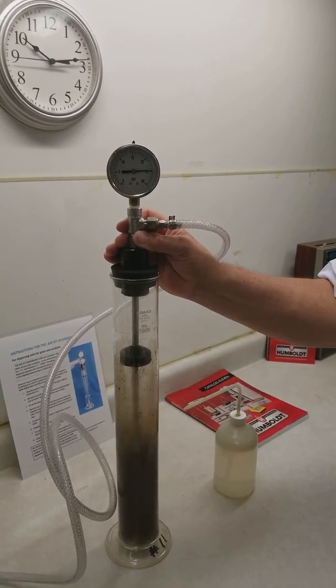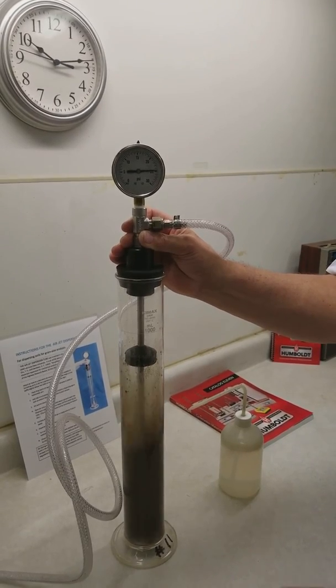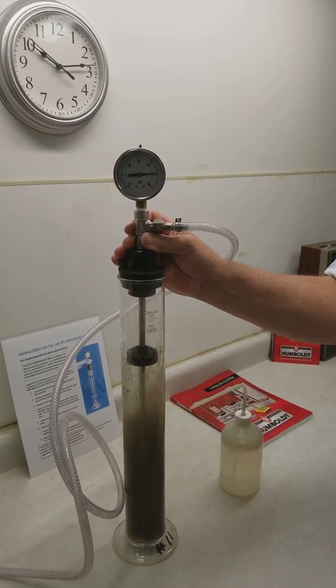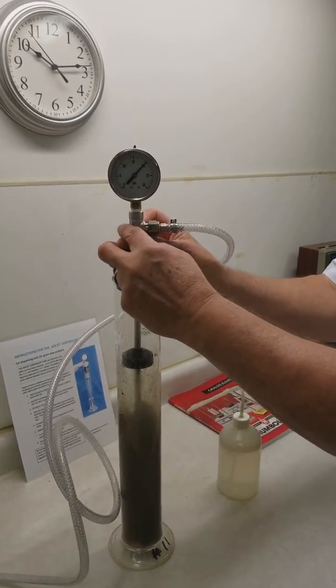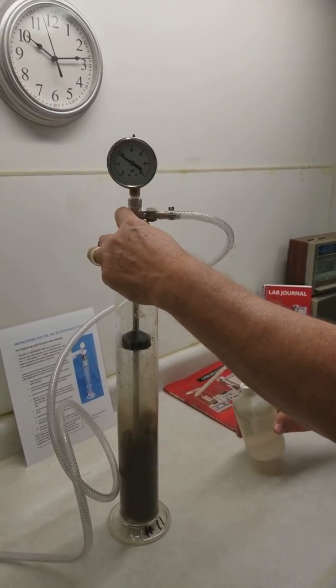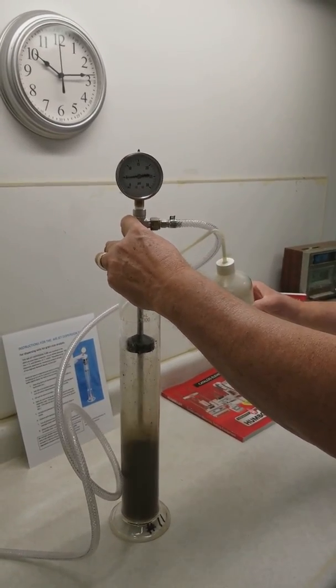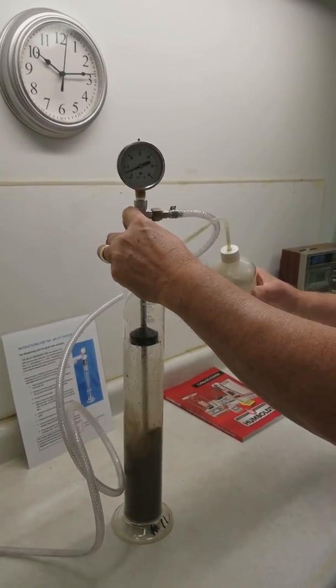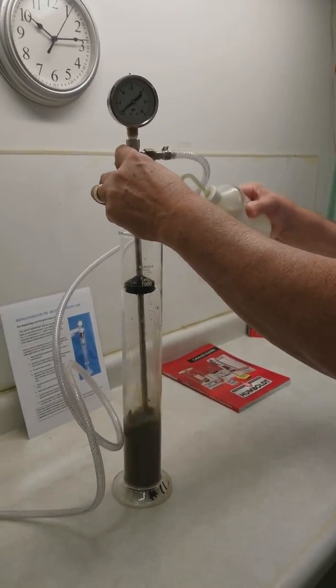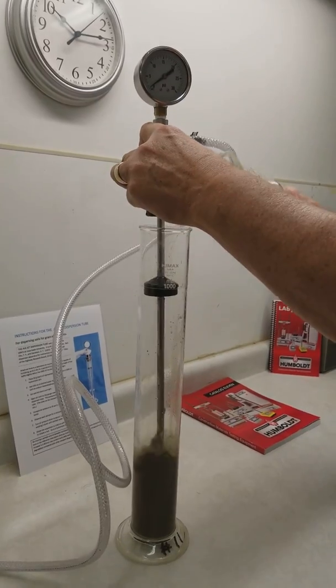At the end of five minutes we will lower the pressure again to about one psi and we will use the wash bottle with distilled water to make sure that we wash all soil particles off the device as we're withdrawing it and keep all the soil particles in the jar.